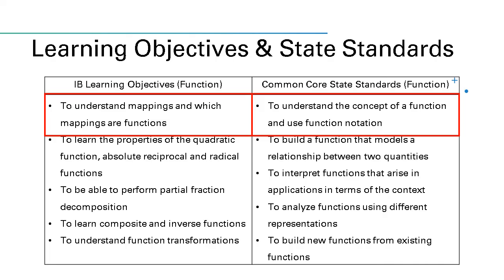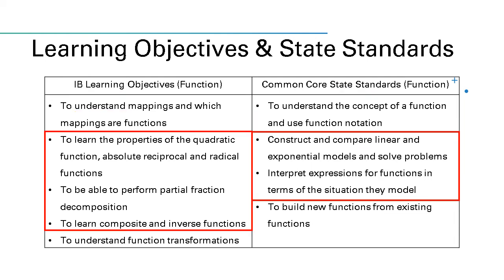Here I've listed some of the learning objectives and compared them to the Common Core State Standards. The first box is about understanding what a function is and learning how to use the notation. The second box is about learning different types of functions, such as quadratic functions, radical functions, or inverse functions, and comparing them and understanding the relationships between those.